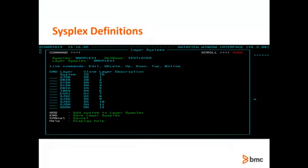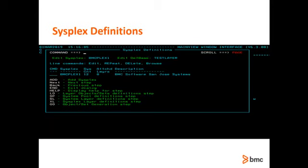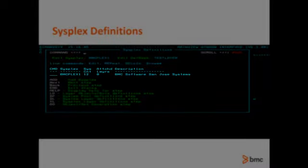Use the add primary command to add a system to the list and fill in the dialog that appears. You can edit an existing system by using the edit line command. When you have finished adding, editing, or deleting systems in the sysplex definition, press End. You'll now see the new sysplex definition along with the number of systems identified for that sysplex.